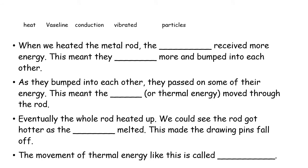Pause the video and fill in the blanks, then discuss with your partners. When we heated the metal rod, the particles received more energy, meaning they vibrated more and bumped into each other. As they bumped into each other, they passed on some of their energy, so the heat or thermal energy moved through the rod. Eventually the rod heated up, as shown when the vaseline melted and the drawing pin fell off. This movement of thermal energy is called conduction.